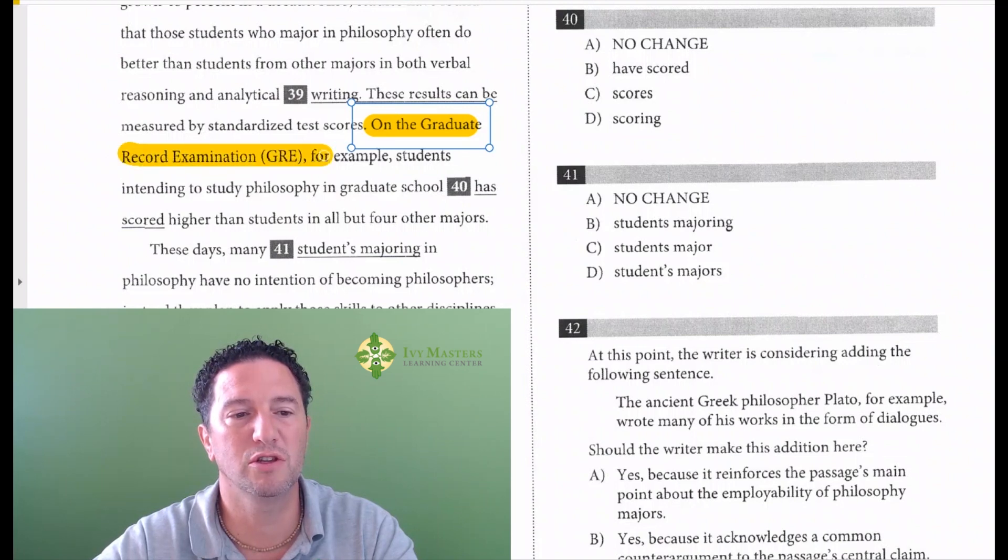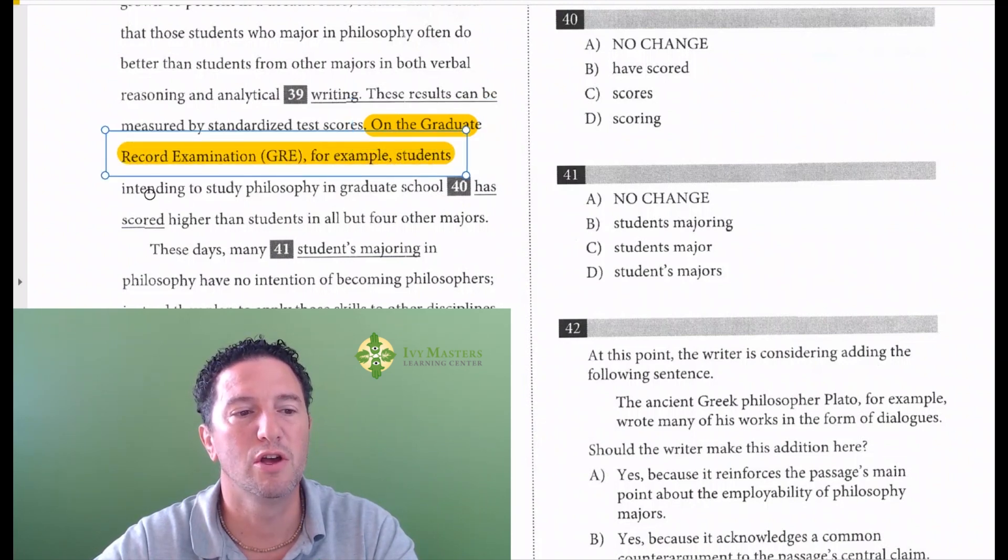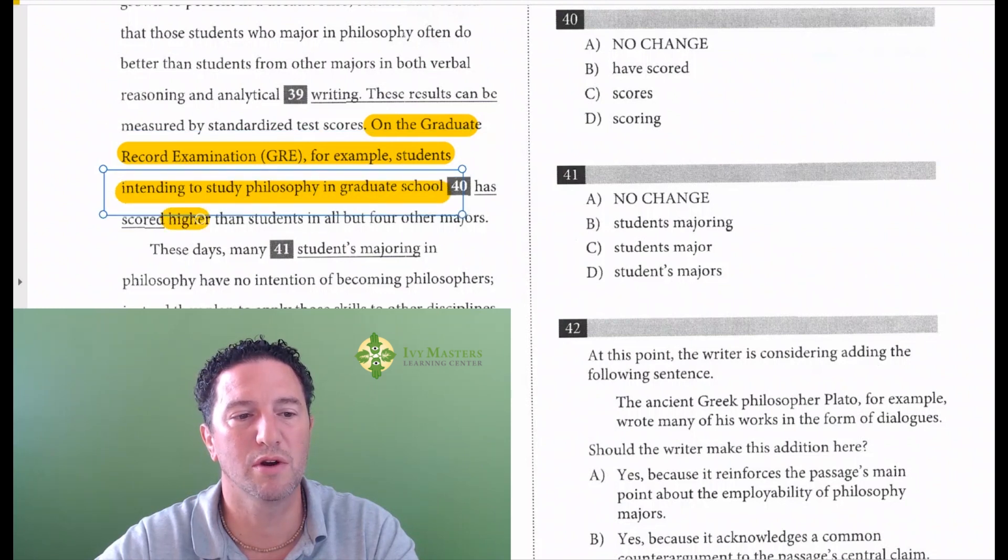On the Graduate Record Examination, the GRE, for example, students intending to study philosophy in graduate school have scored higher than students in all but four other majors.